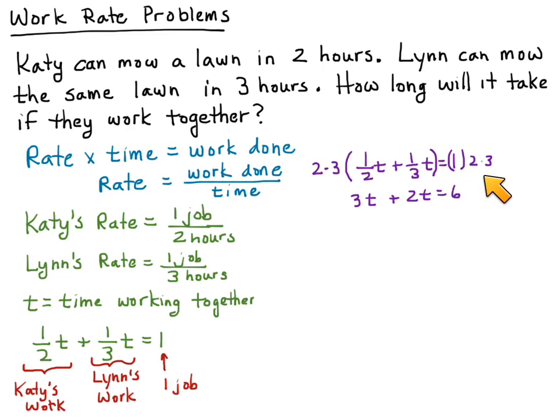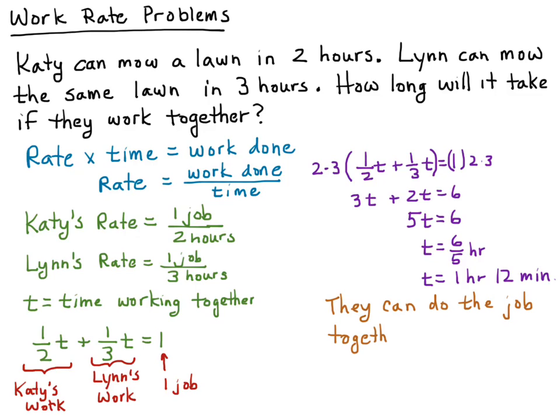Now we have 1 × 2 × 3, and that equals 6. So we have this nice tidy integer equation: 3t + 2t = 6. We add those together to get 5t = 6, so the amount of time it takes is 6/5 of an hour.